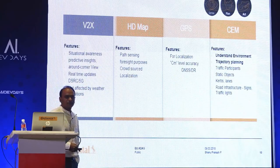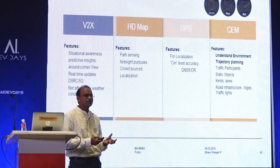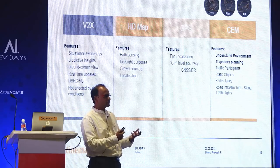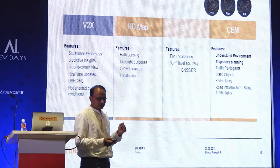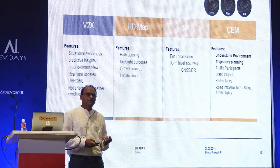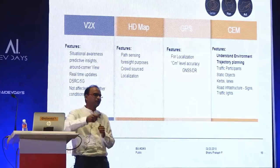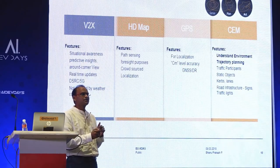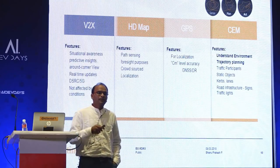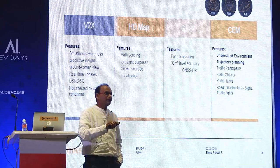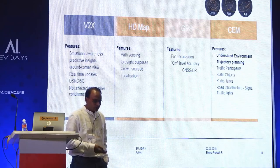Other building blocks include V2X — vehicle-to-vehicle communication — using 5G and DSRC technologies for vehicle-to-infrastructure or vehicle-to-vehicle communication. While other sensors are line-of-sight, V2X can give information beyond line-of-sight — for example, what's happening around a corner — so the vehicle communicates ahead of time to be careful when turning. HD maps are not just Google Maps; they contain road semantics — where lanes are, where traffic lights and traffic signs are — which is a really important block.